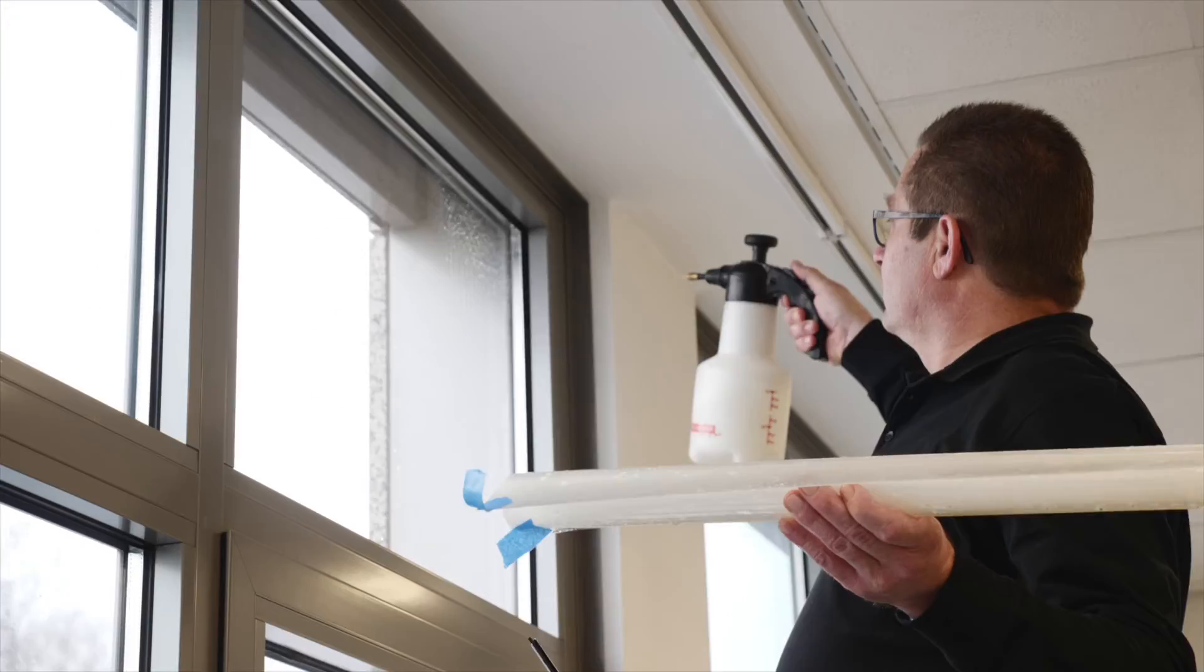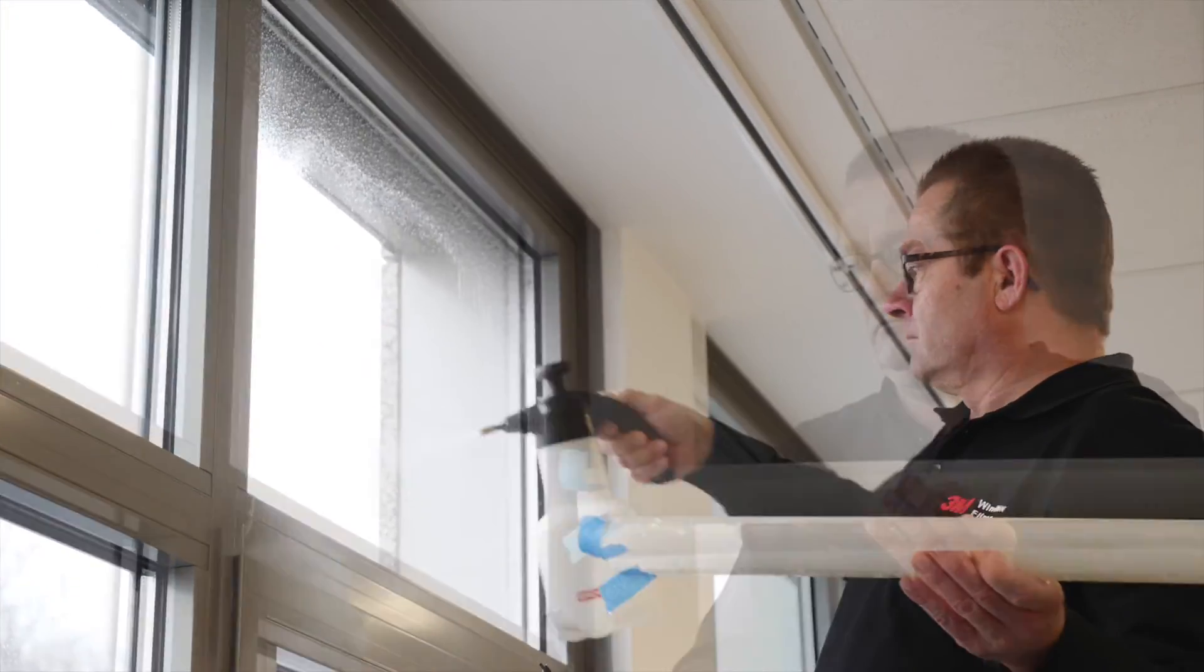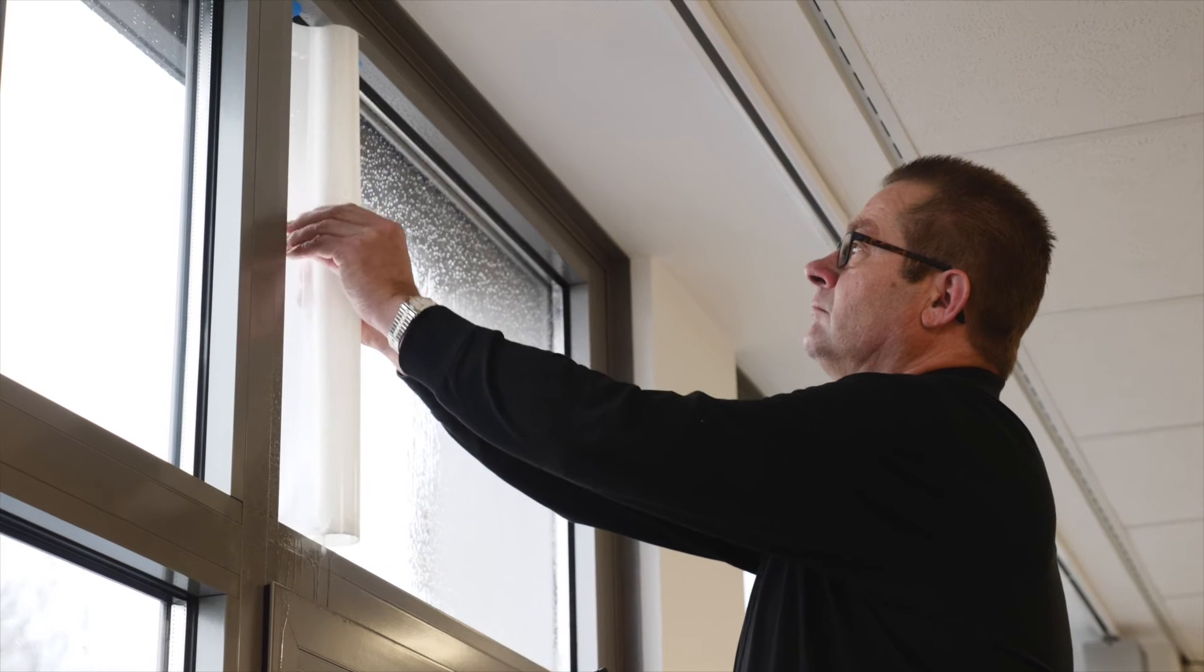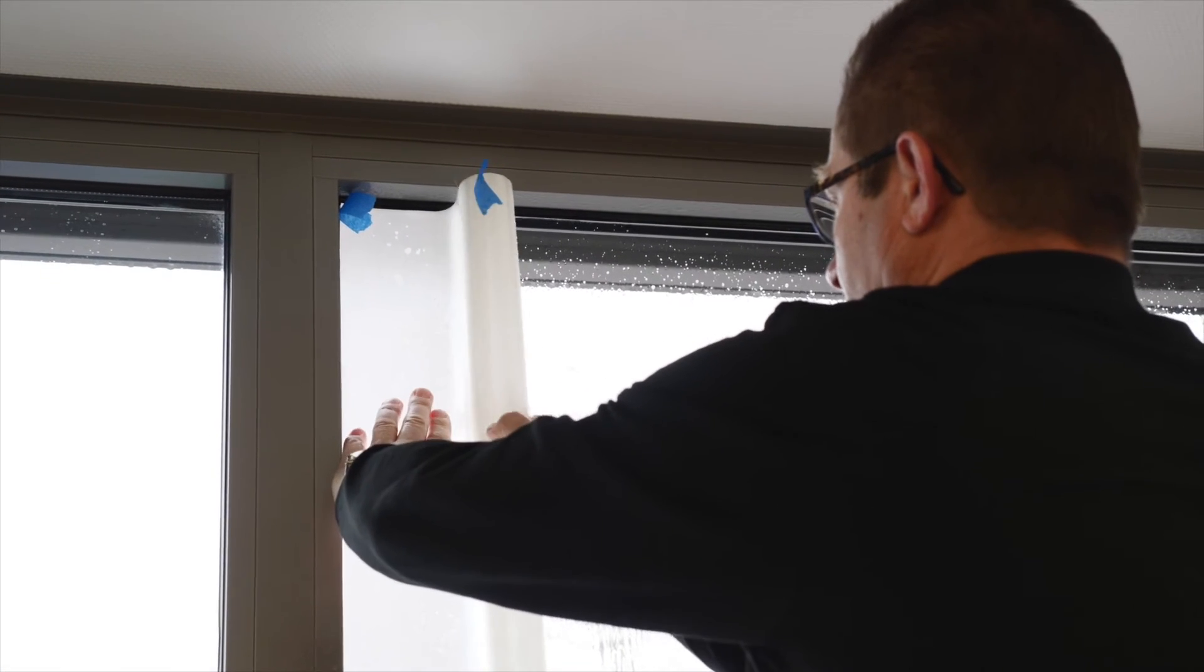Wet the window again. Place the film roll onto the window with the tape top left-hand corner and start to unroll, carefully separating the film from the liner.